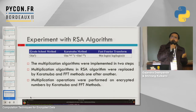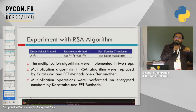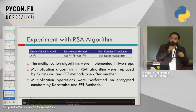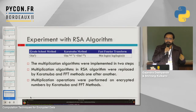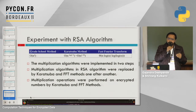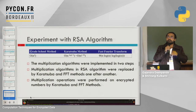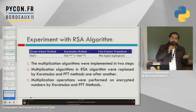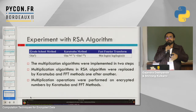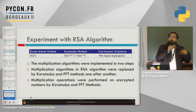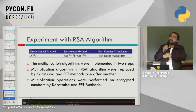With respect to RSA, we are performing the experiment at two stages. First, we modify the algorithm by replacing the multiplication in the RSA algorithm with Karatsuba or fast Fourier transform methods. Second, once the modifications are done to the RSA algorithm, we use the modified RSA algorithm to encrypt our data. When we encrypt our data, we also need to perform multiplication operations on the encrypted data — there, instead of using the default star operator, we use fast Fourier transform or Karatsuba. Basically, we are replacing our default multiplication at two stages: one at the algorithm level, and one at the execution level.